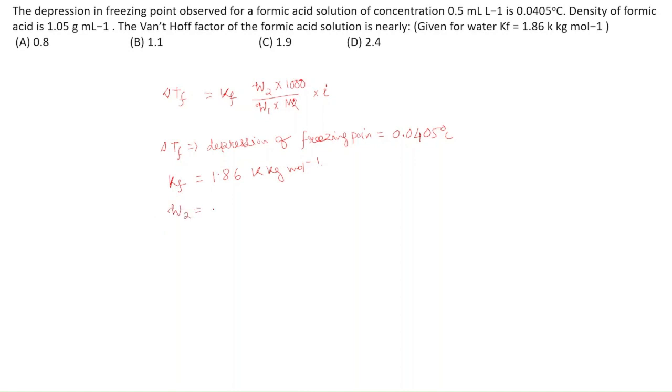W2 is the weight of solute, that is, formic acid. It is given that the concentration of formic acid is 0.5 mL, so 0.5 mL acid is present.